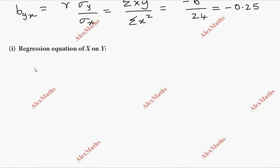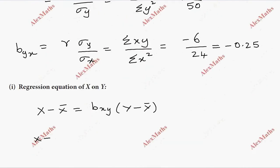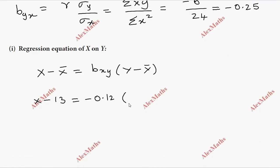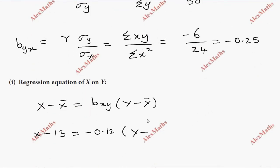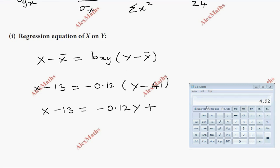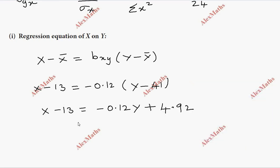So the regression equation of x on y uses the formula: x minus x-bar equals bxy into y minus y-bar. Substituting: x minus 13 equals -0.12 into y minus 41. Simplifying: x minus 13 equals -0.12y plus 4.92, so x equals -0.12y plus 17.92.